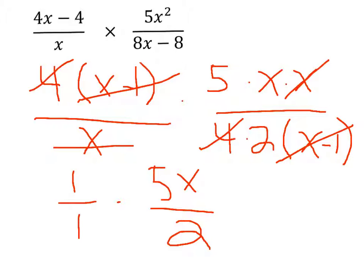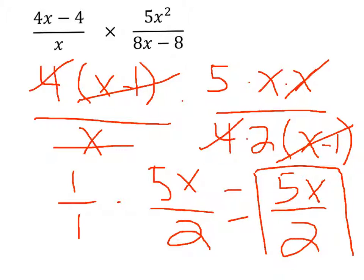Since 1 over 1 equals 1, and anything multiplied by 1 is itself, the final answer is 5x over 2. That is how it's done.